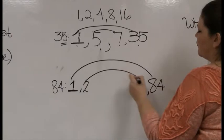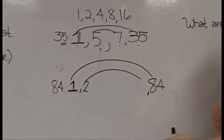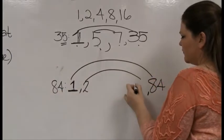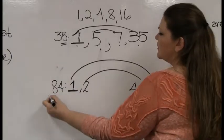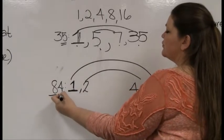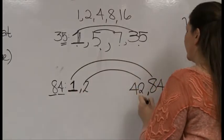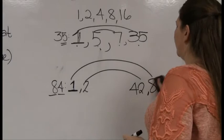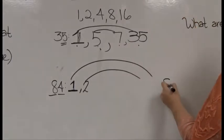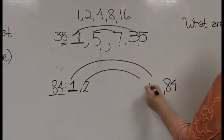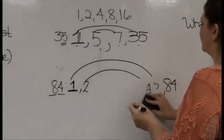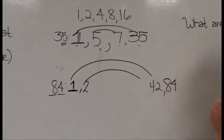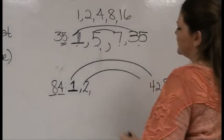Does 84 divide by 2? Of course it does — it's an even number. 2 times what is 84? That one's easy with short division: 2 goes into 8 four times perfectly, 2 goes into 4 twice perfectly. So 2 and 42 are factors. I need to make sure I've got enough room for this one.